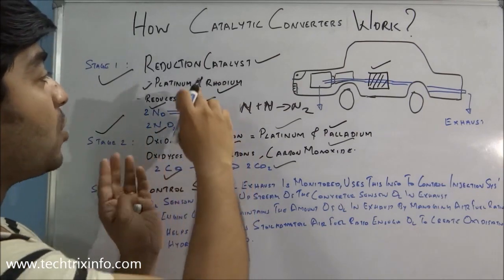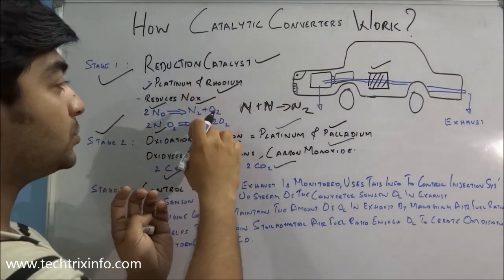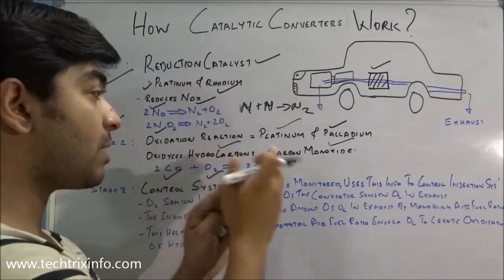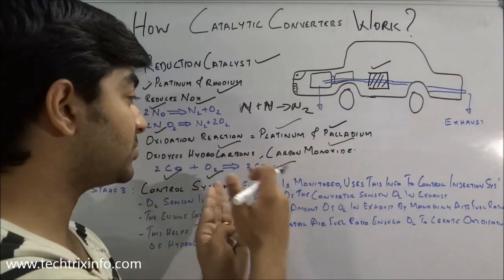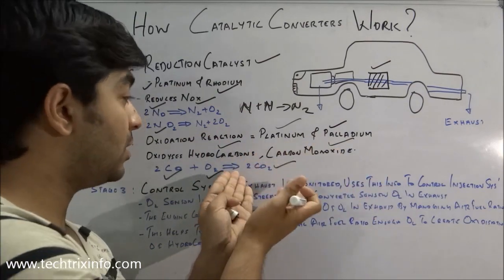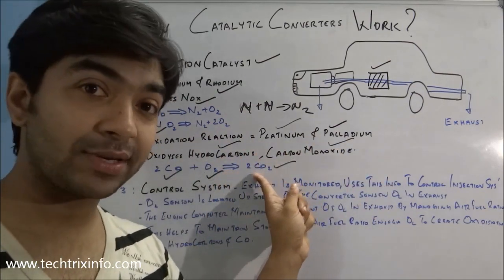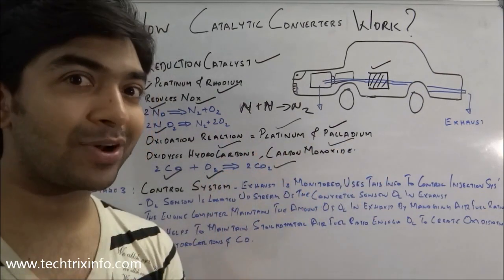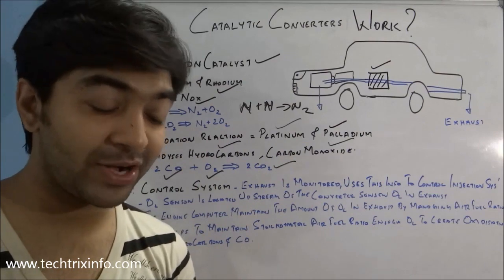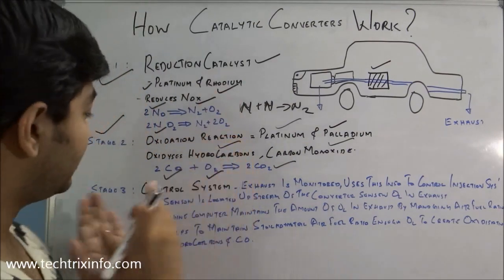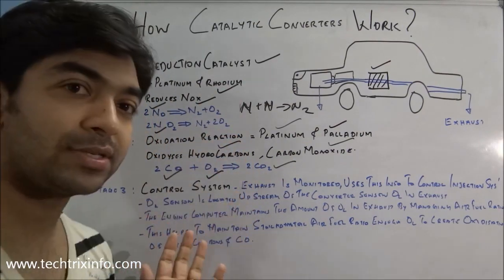So to summarize: NOx has been reduced to nitrogen and oxygen in stage one; hydrocarbons and carbon monoxide are converted to water vapor and carbon dioxide in stage two. The harmful components are reduced across these two stages.